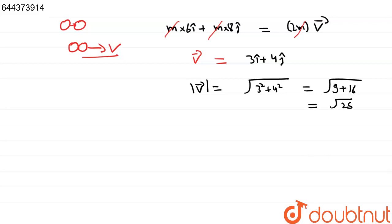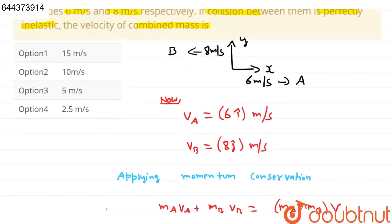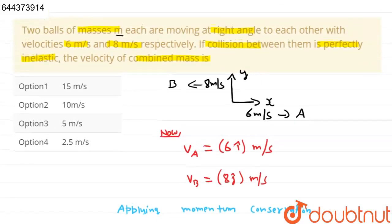This equals √25. Therefore, final velocity will be |V| = 5 meter per second. So, final velocity is 5 meter per second, option 3.